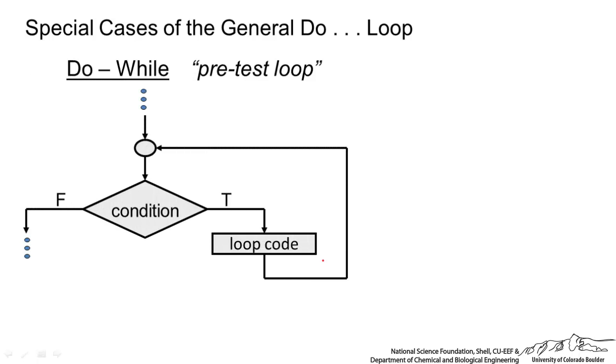Some other special cases of the do loop. We have a do while. And this is also known as a pretest loop. We have a loop and the test is before the loop code. When we say do while condition, that means while this condition is met, we are going to go through code. So you can put in loop code and you keep looping while it is true.